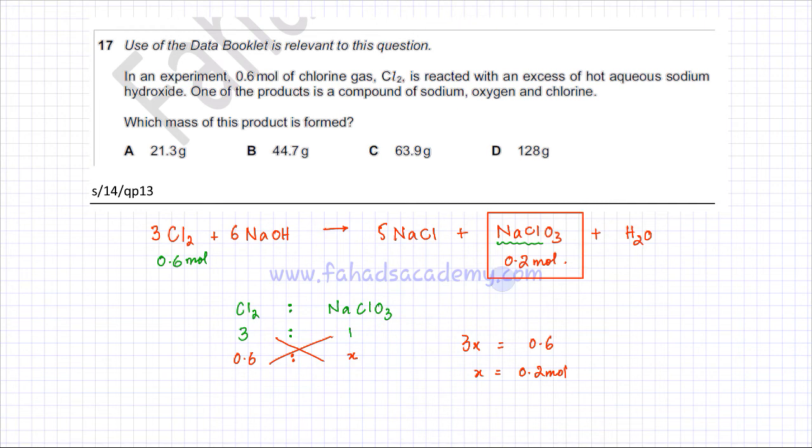The formula for mass is mass equals moles multiplied by MR of NaClO₃, which in this case, the moles are 0.2 moles. And the MR of NaClO₃ is going to be 23 plus Cl is 35.5, and there are 3 oxygens, so that's 16 into 3.